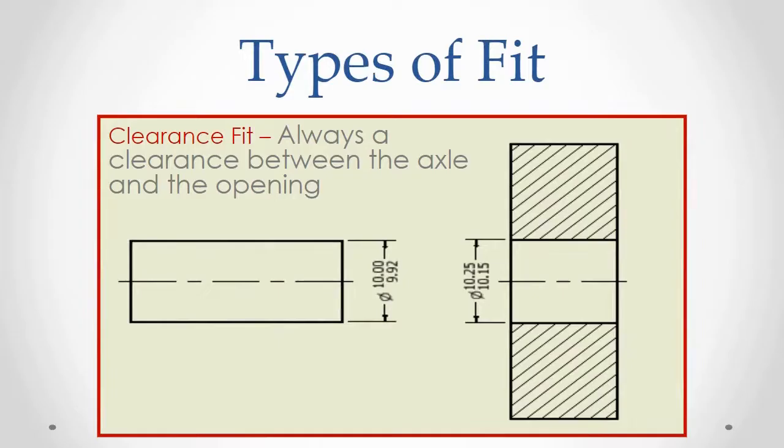Here, the maximum size of the axle is 10 millimeters and the minimum size of the hole is 10.15 millimeters. If these parts are manufactured within tolerance, there will always be a clearance fit between these two parts when the axle is inserted through the hole.